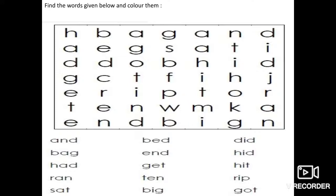So what you can do is you can take a paper and you can ask mummy to make square columns, or you can take a paper from the maths book. Write down these letters, one letter in one box, and then you can find these words. It's going to be a fun activity - this is quite fun!